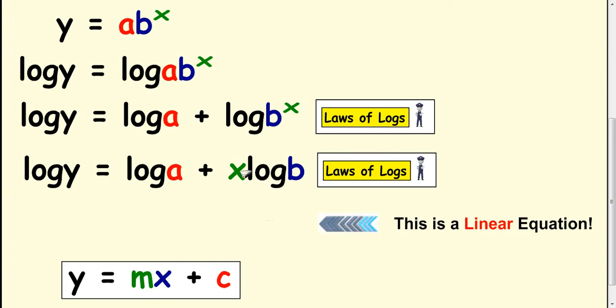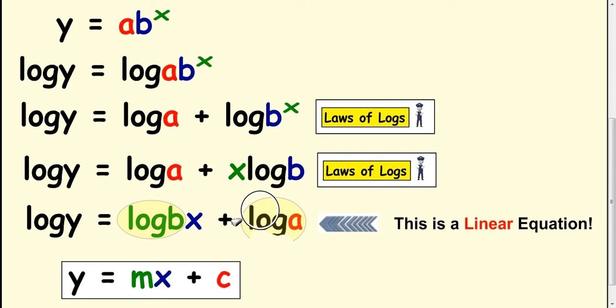And then rearrange this. So write this first. Now you'll see this time there's a slight difference. What we're saying is the log of b is now the gradient, and log of a is the same idea as before, that's the intercept.